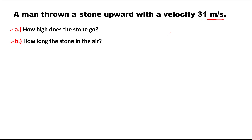If this is the man that thrown a stone upward, the velocity is 31 meters per second. Take note: at the maximum height, the final velocity is equal to 0.